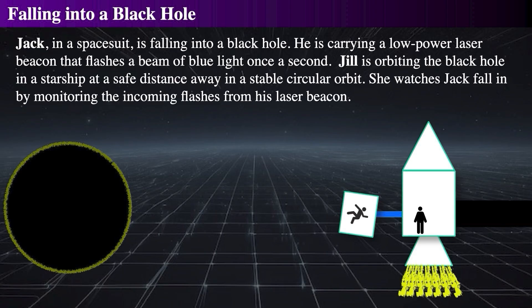Jack, thinking it might help him get a contract with an extreme sports channel, dons his space suit and enters a small pod. He has a blue laser, which he will use to send signals back to Jill.